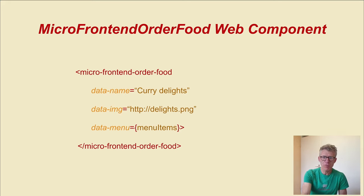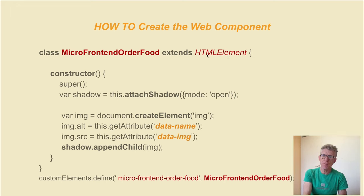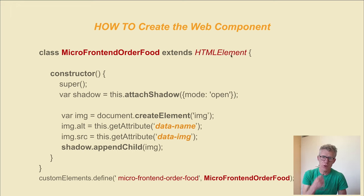To make a web component for this self-made tag, you have a class with the name MicroFrontendOrderFood which extends HTMLElement. With that element you can build custom web components. In the constructor, we call super — when you call super, you can use all the logic from the HTMLElement. So from this starting point, you can build your own web component. You attach the shadow DOM to the web component.